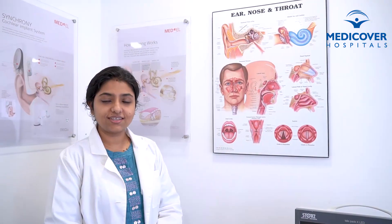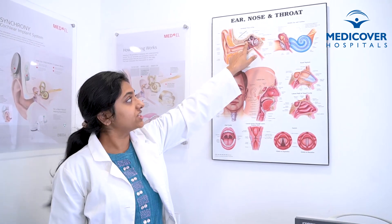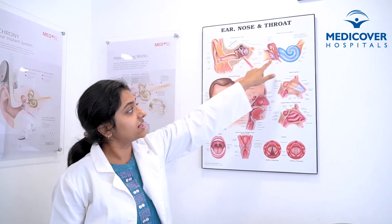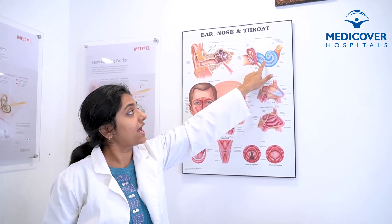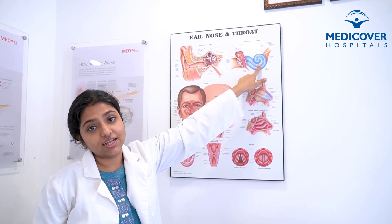To understand how these devices work, first we have to understand the normal physiology of the ear in a simplified way. The human ear has three basic parts. This is the outer ear canal which ends with the ear drum, and then there is a space called the middle ear, and the blue portion is the inner ear.